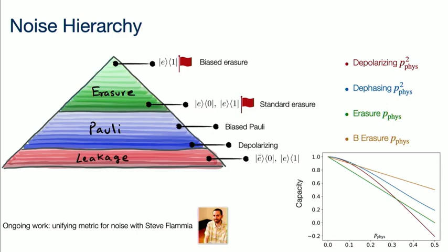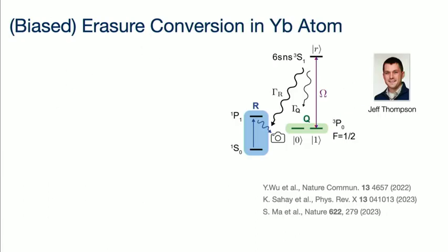The biased erasure channel is really good. Here we present work in collaboration with Jeff Thompson's group from Princeton, where we design a qubit in neutral atoms where the dominant noise channel is biased erasure. The idea is to encode the qubit in the metastable states of your atom rather than the ground state. These metastable states have long lifetimes. When the qubit is in these metastable states, they don't really interact with each other. To do gate operations, you excite the qubit into the Rydberg states — particularly the one state to the Rydberg state — and that's when the qubits start talking to each other, enabling gates via Rydberg blockade such as controlled-Z gates. The main source of error is the Rydberg state decaying to other states in the system, such as the ground state of the atom.